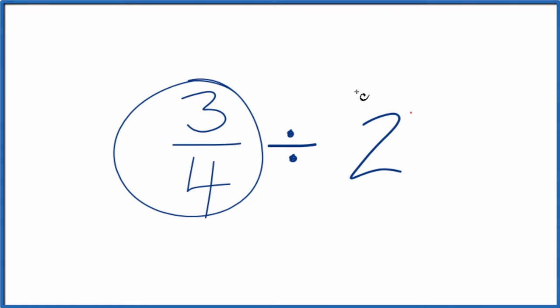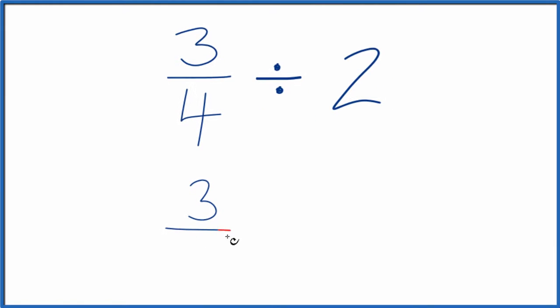Let's divide 3 fourths by 2. And here's how we do it. We take 3 fourths, and instead of division, we're going to multiply.